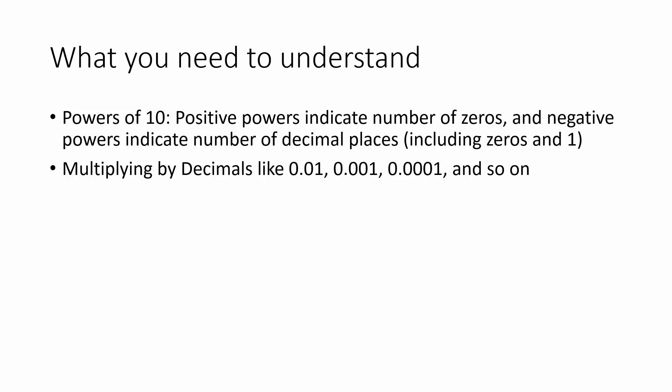So what we need to know about powers of 10 is that positive powers indicate the number of 0s, and negative powers indicate the number of decimal places, including the 0s and the 1, to the right of the decimal.